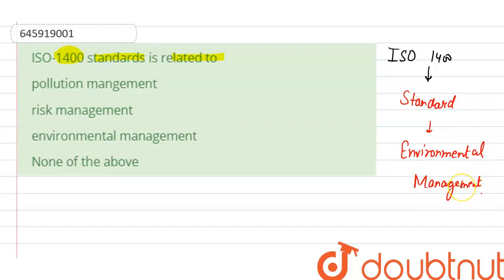You know that there are some organizations that can manage the environment, which can manage its own possibilities. The options given are: pollution management, risk, environmental management, or none of the above. As I explained, the correct option is Option C — environmental management.